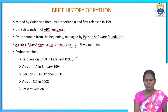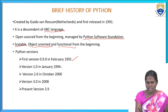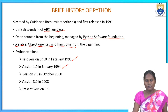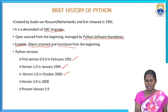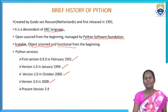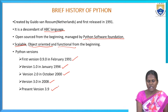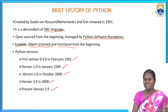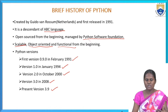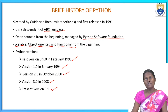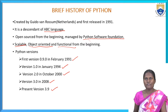The first version was 0.9.0. Next, version 1.0 came in January 1994. Then version 2.0 in October 2000. Next, version 3.0 in the year 2008. The present version we are using is 3.9, and some are also using version 3.6. So from 1991 up to now, we have seen versions 0.9.0, 1.0, 2.0, 3.0, and the present version 3.9. This is about the brief history of Python.